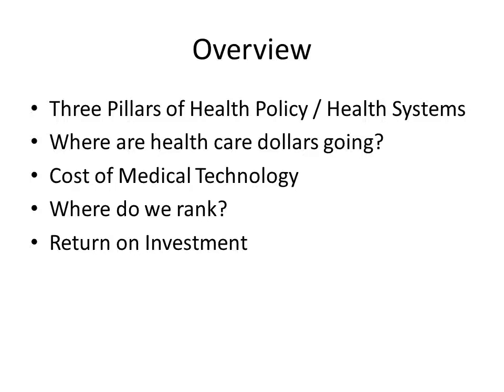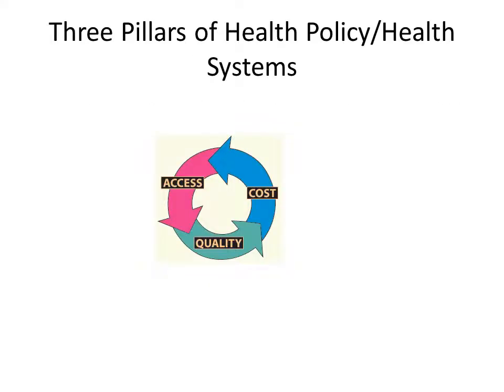We're going to talk briefly about the three pillars of health policy, health systems, where health care dollars are going, costs of medical technology, and where we rank compared to other countries with regards to costs and our return on investment. The main three pillars of health policy — if you're getting a health policy degree in a public health school — are access, costs, and quality. These are the fundamental pillars, and they are often intertwined and interact in a variety of different ways.